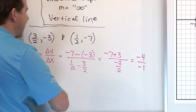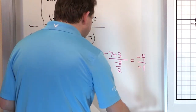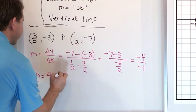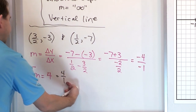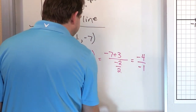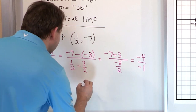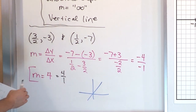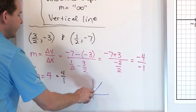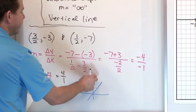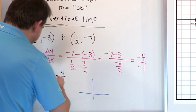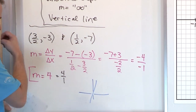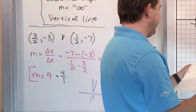The slope is 4, which means 4 over 1 — rise over run. Because it's a positive slope, the line slants upward to the right. The rise is 4 units and the run is 1, so it's quite steep. You go up 4 units and over 1, up 4 units and over 1. I won't plot every single one, but that gives you the picture.